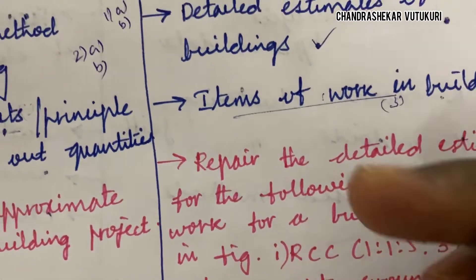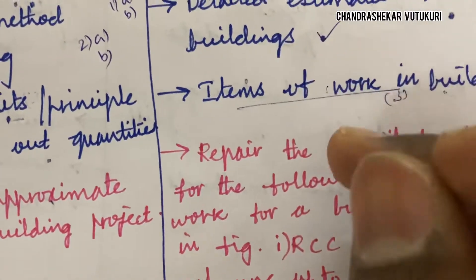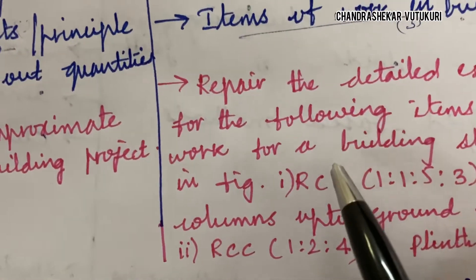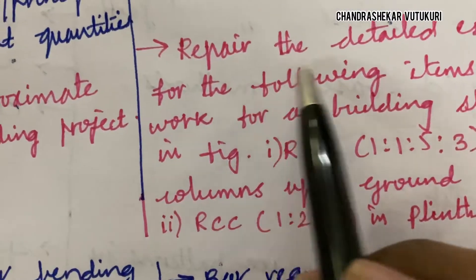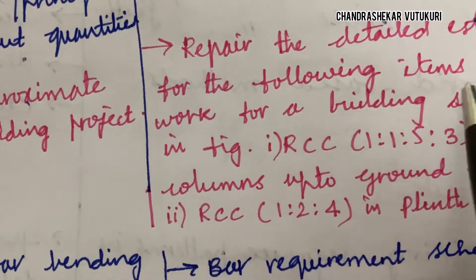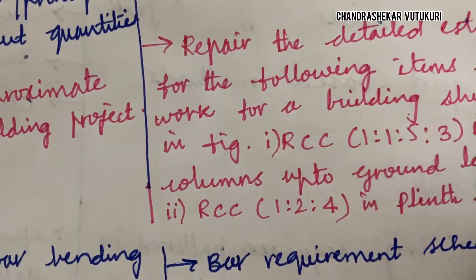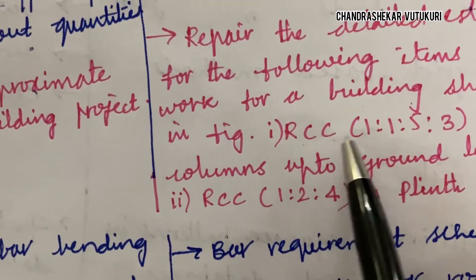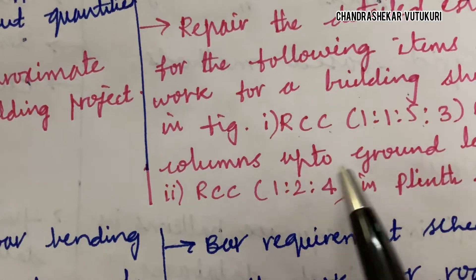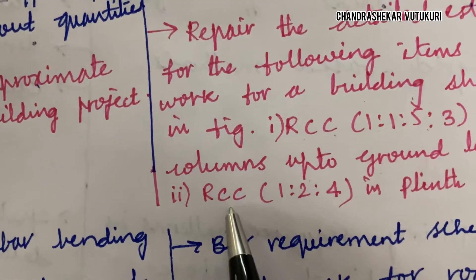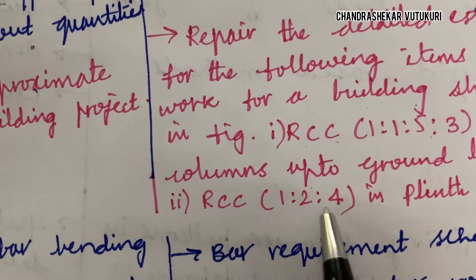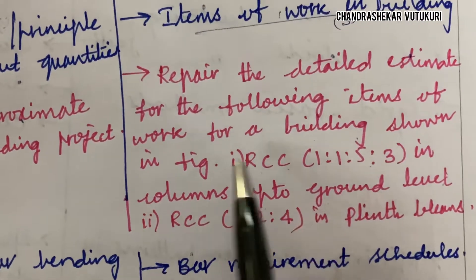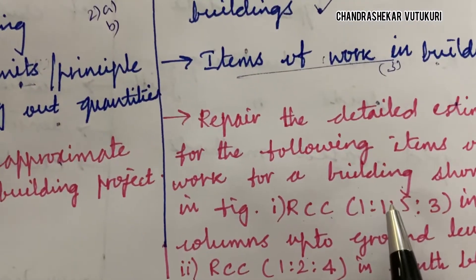Related to detailed estimates, you'll be getting question 3A or 3B directly — for example: prepare the detailed estimate for the following items of work for the building shown in the figure. A figure will be given and you need to work out for RCC 1:1.5:3 in columns up to ground level, as well as for RCC 1:2:4 in plinth beams. This is a sample question taken from earlier question papers.